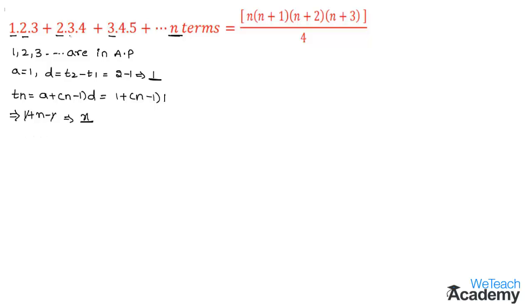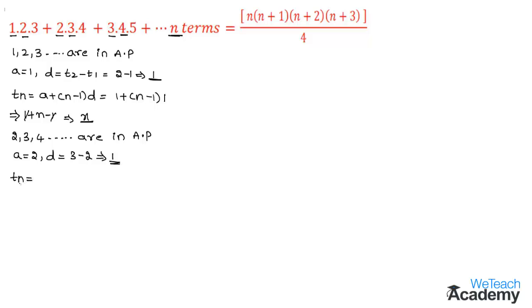Now let us consider the second factors of the series. We have 2, 3, 4 in arithmetic progression, so a = 2 and d = 3 − 2 = 1. The nth term is tn = 2 + (n−1)×1 = 2 + n − 1 = n + 1.